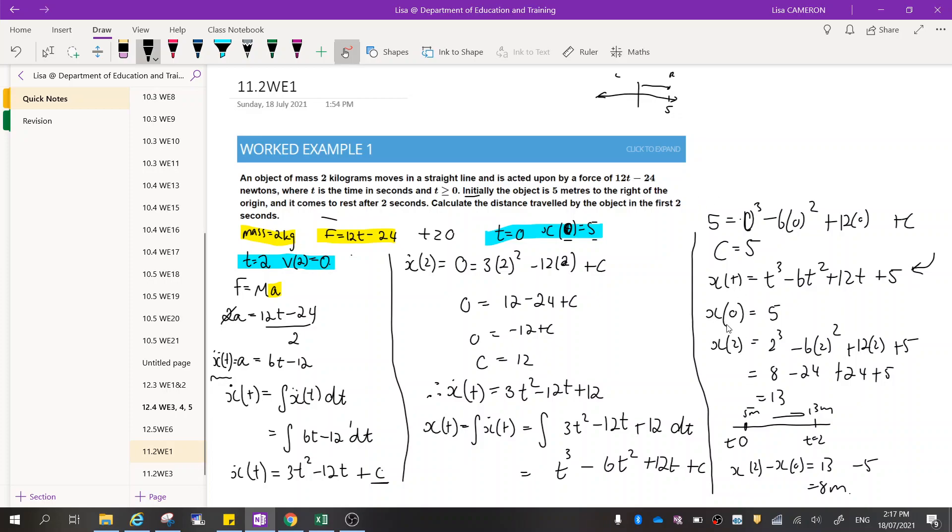So to calculate the distance travelled by the object in the first two seconds, I'm going to let t equal 0, which gives me 5 as above, and I'm going to let t equal 2 and substitute that in, which is 13. Now that I've got my two values, all I need to do is measure the distance between the two to find out how much it's travelled in that time. So if it started at 5 and went to 13, I can do 13 minus 5 to work out the distance between them, which gives me 8 metres.